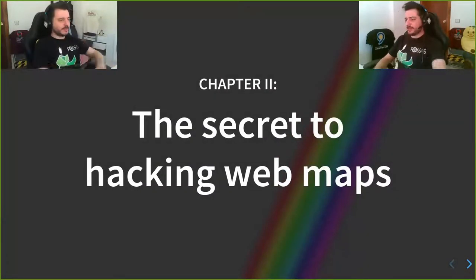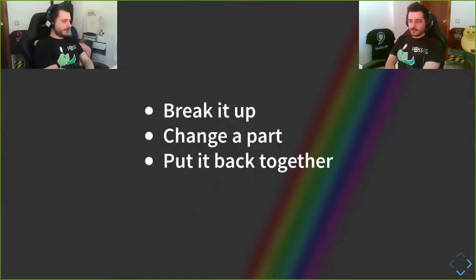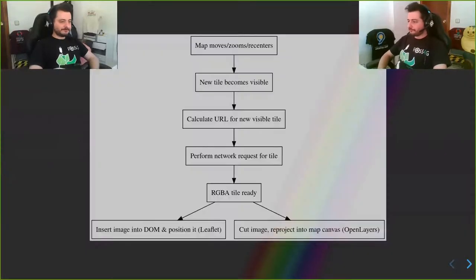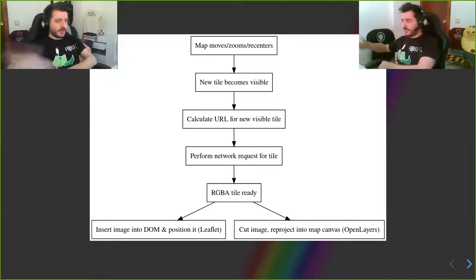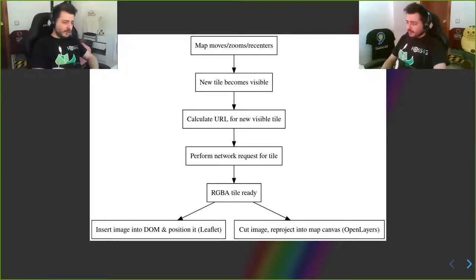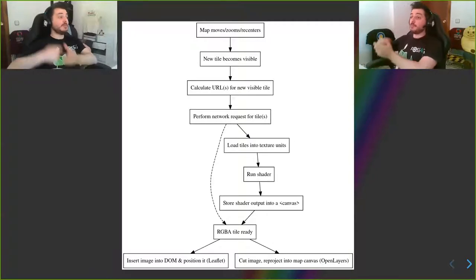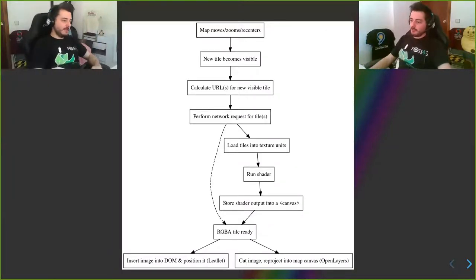So I'm going to share the secret of hacking webmaps. You do analysis, morphosis, synthesis — or in plain English: you break it up, you change a part, and you put it back together. You are aware of all the moving parts in your system, you change one very specific moving part, and you make sure everything stays together. This is how a web mapping library works: you pan the map, get a tile, calculate the URL, fetch it from the network, and when it's ready, put it in the DOM or render it. What I want to do is insert something in the middle in a surgical way — request the tile, get the tile data, put it into the GPU, run the shader, and when you have the RGBA result, put it back into the map as a tile.